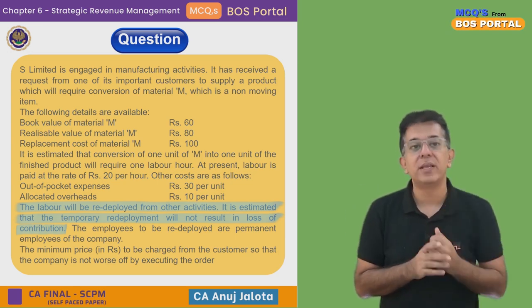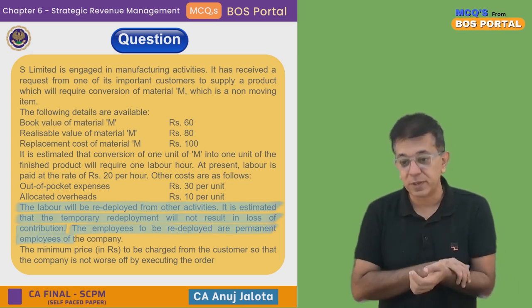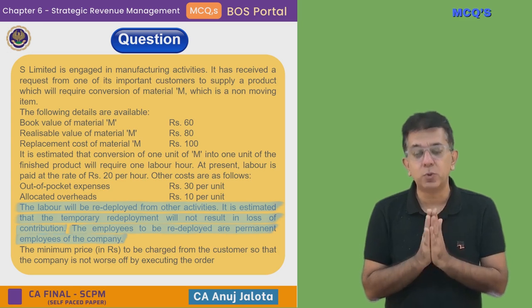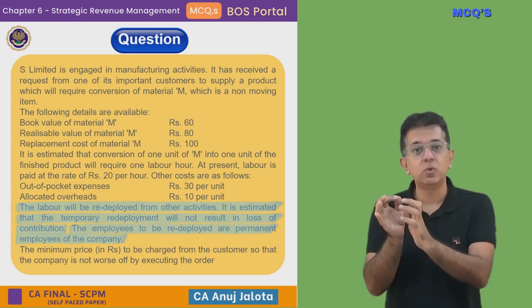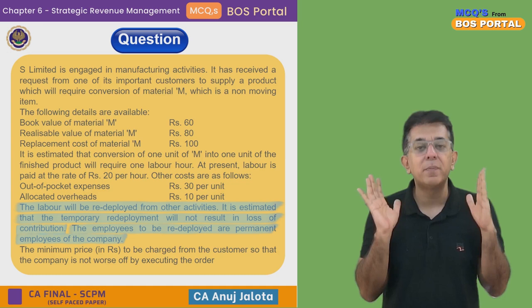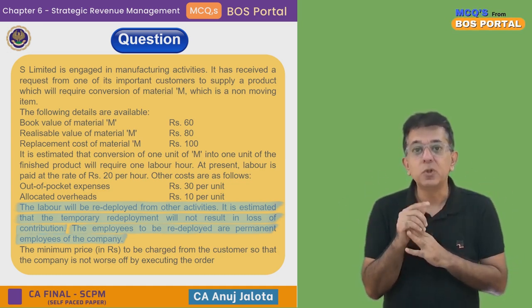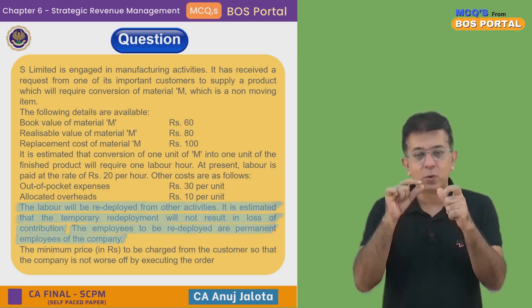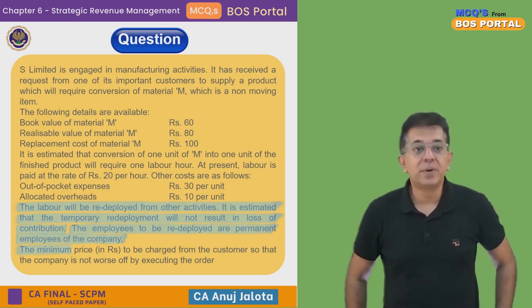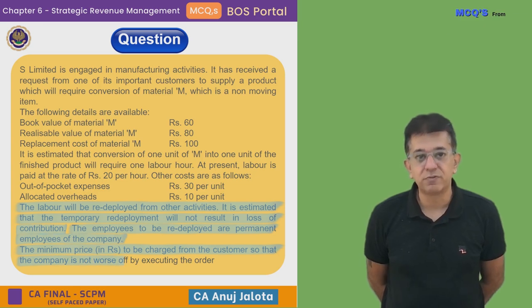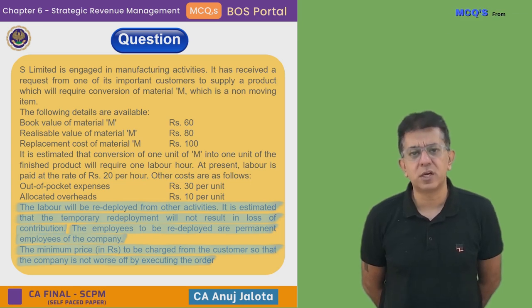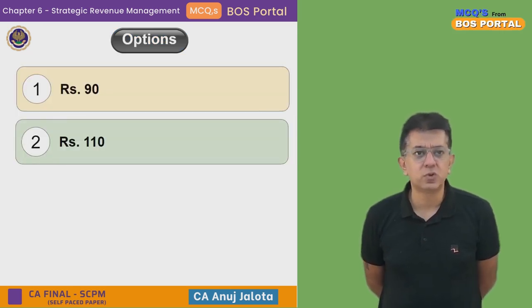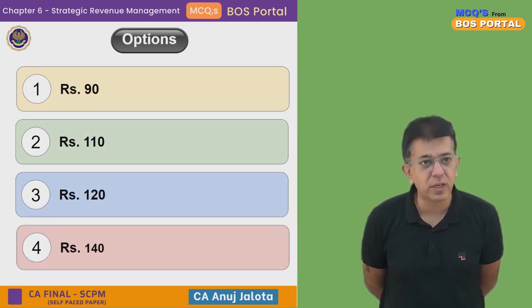Furthermore, the employees to be redeployed are permanent employees of the company. Being permanent means I've guaranteed them pay for a fixed number of hours per month — say 100 hours — whether there is work or not. Those 100 hours may not be fully utilized; they may have spare time. I tell them to use that spare time for this new order. The question asks: what is the minimum price in rupees to be charged from the customer so that the company does not lose by executing the order? The four options are ₹90, ₹110, ₹120, and ₹140.